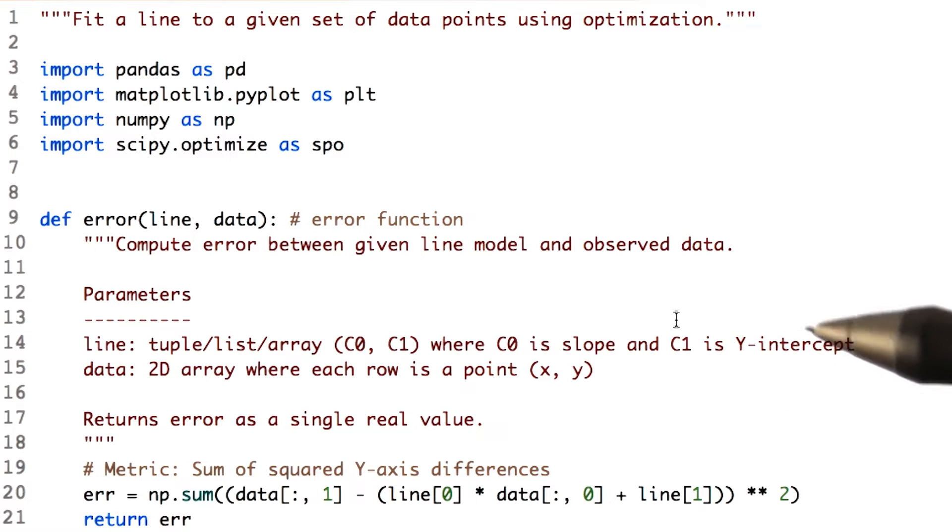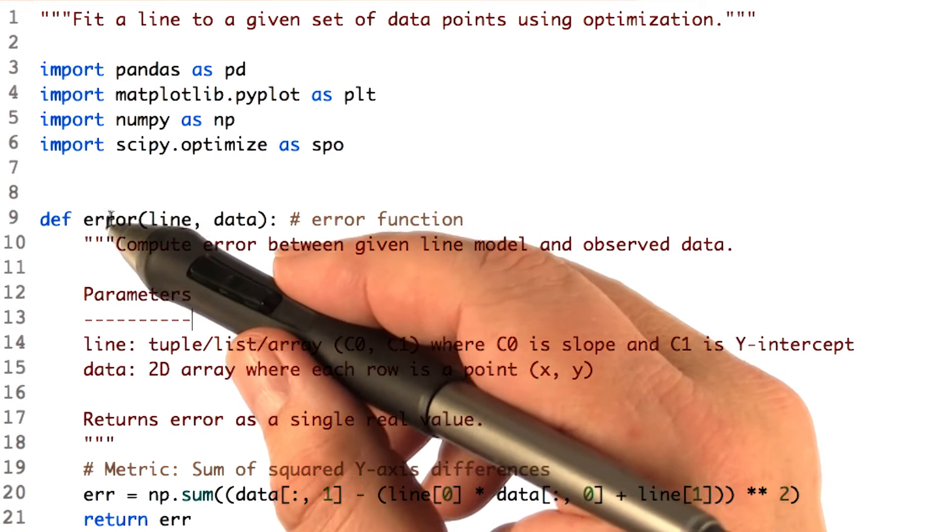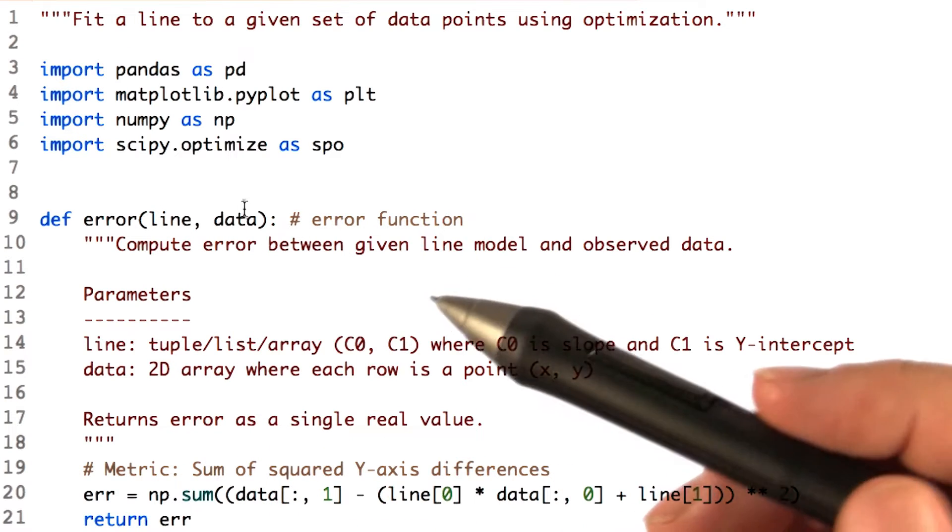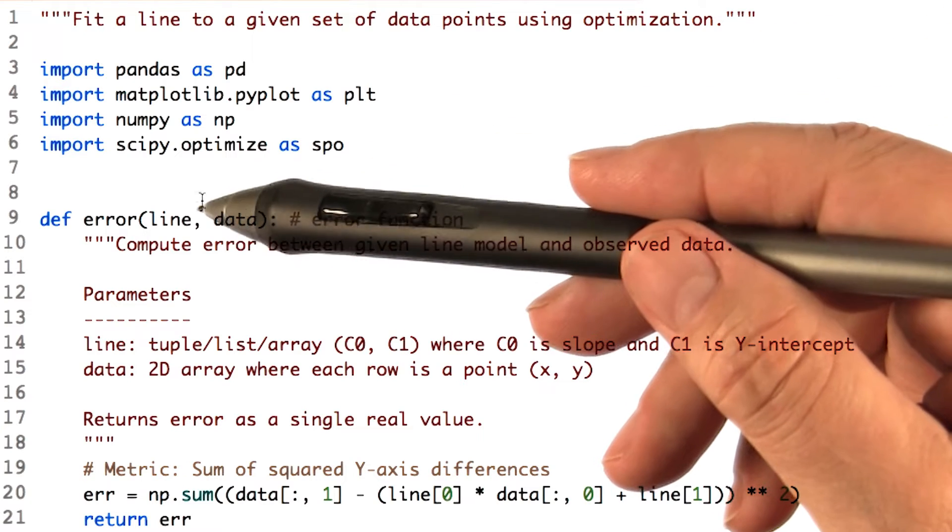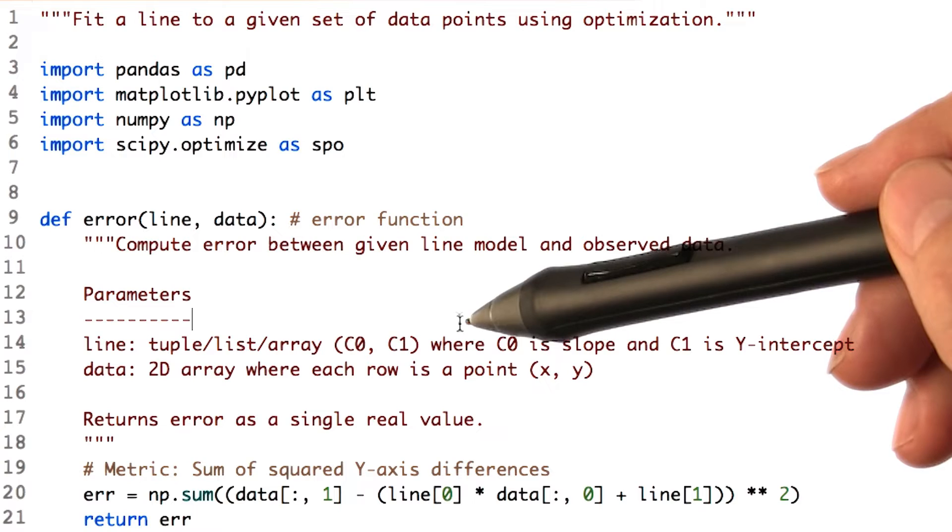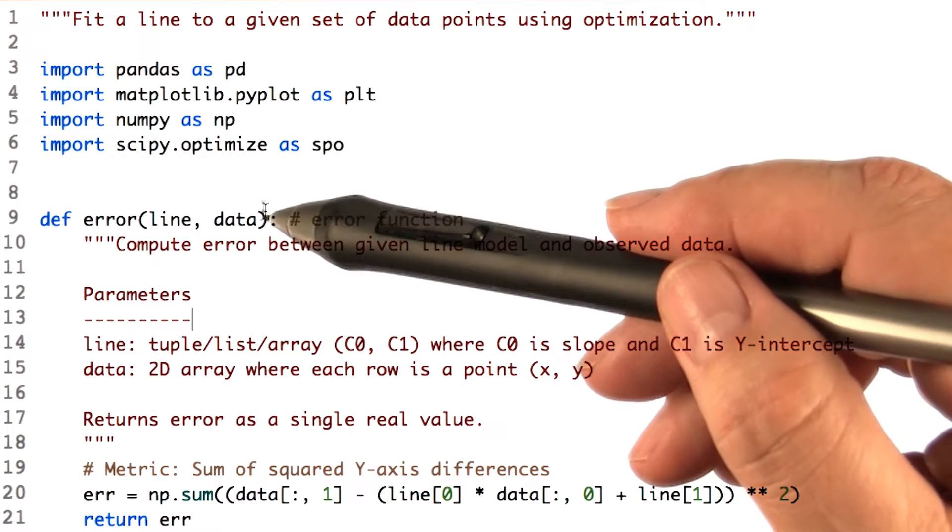First thing we have to do is describe for the optimizer what is the function it's trying to minimize. So we'll call this function error, and it takes two parameters, line and data. Line is just two coefficients, C0 and C1, and data is just a list of data, of course.